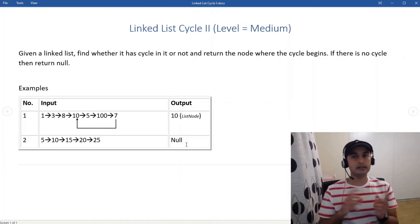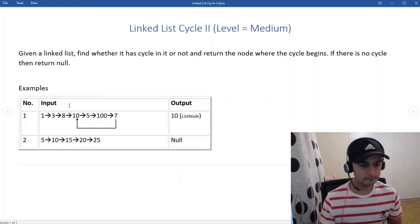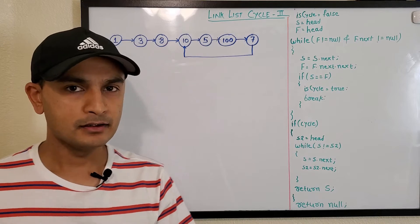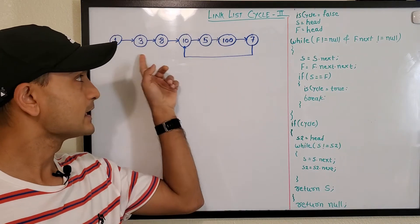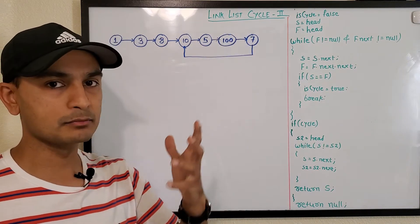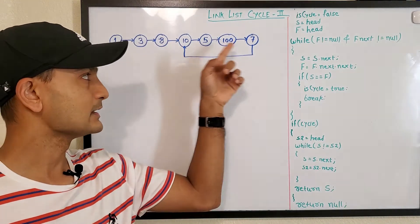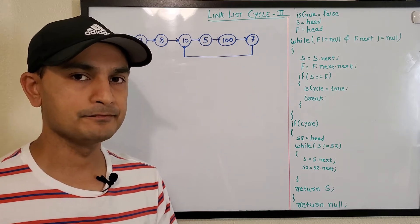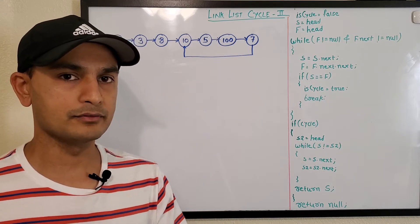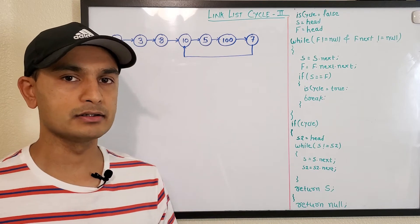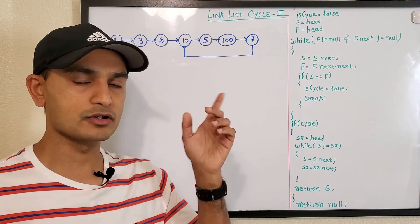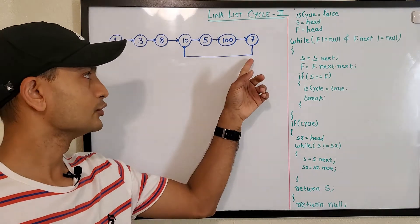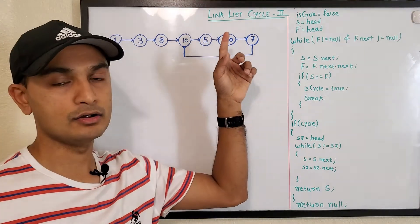This is our example for the Linked List Cycle 2 problem. If you guys recollect, we had the same example for the Linked List Cycle 1 problem, where we just had to detect whether it has a cycle or not and the difficulty level was easy. If you haven't seen it, a link should come on top — you can pause this video, watch that one, and then come back.